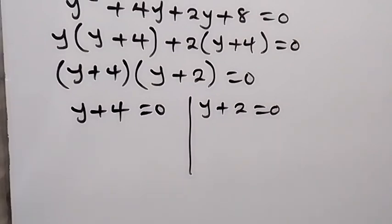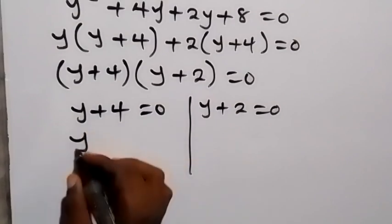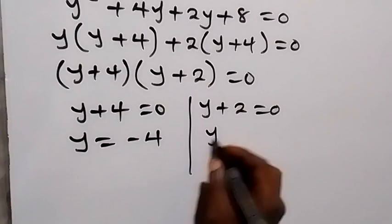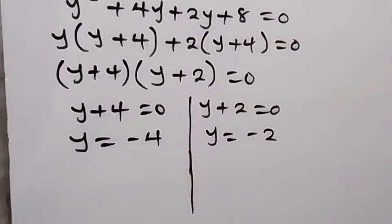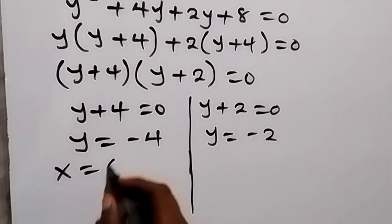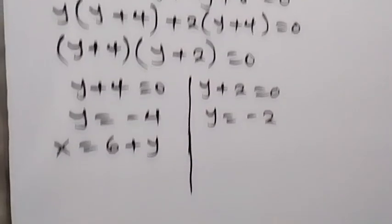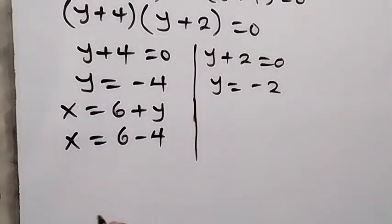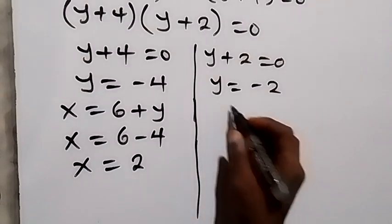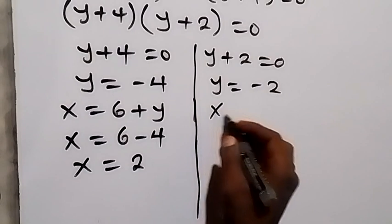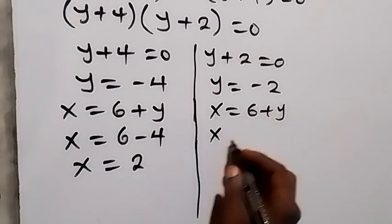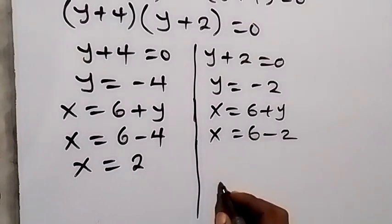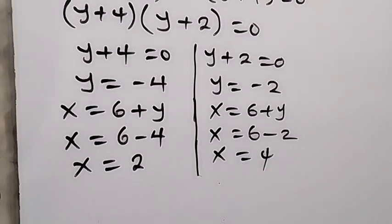From these two cases, y equals minus 4 or y equals minus 2. Using equation 3, x equals 6 plus y. When y equals minus 4, x equals 6 minus 4 equals 2. When y equals minus 2, x equals 6 minus 2 equals 4.